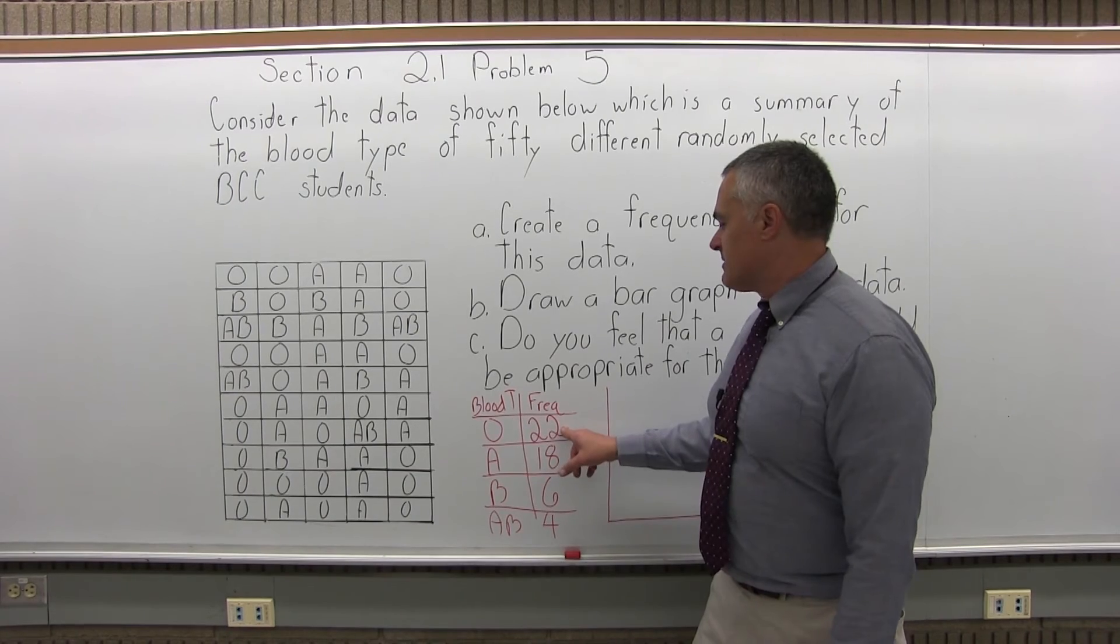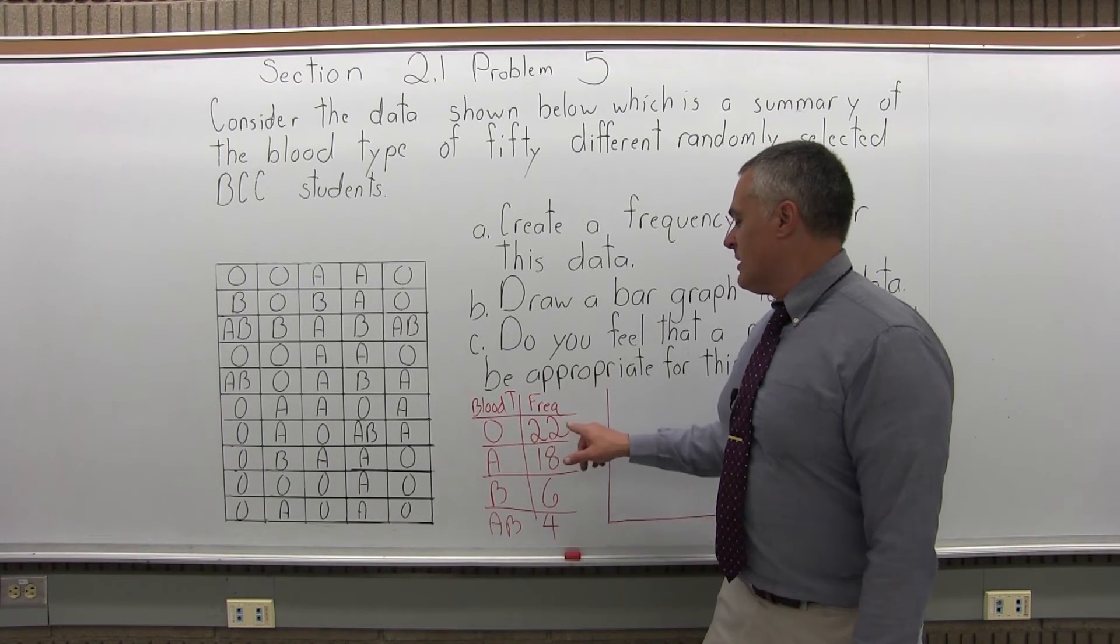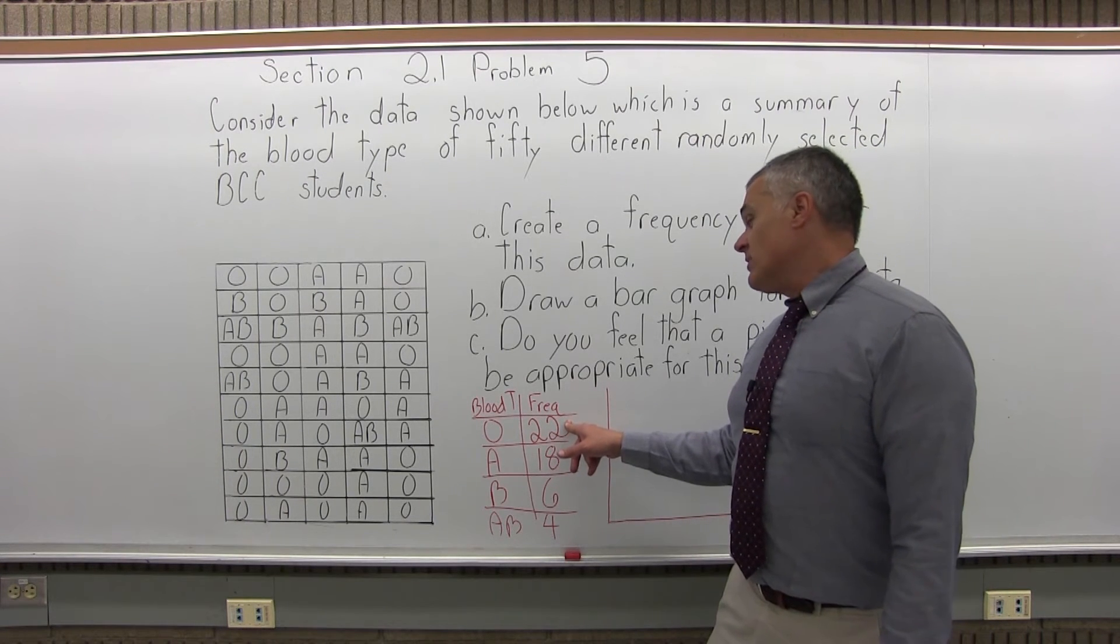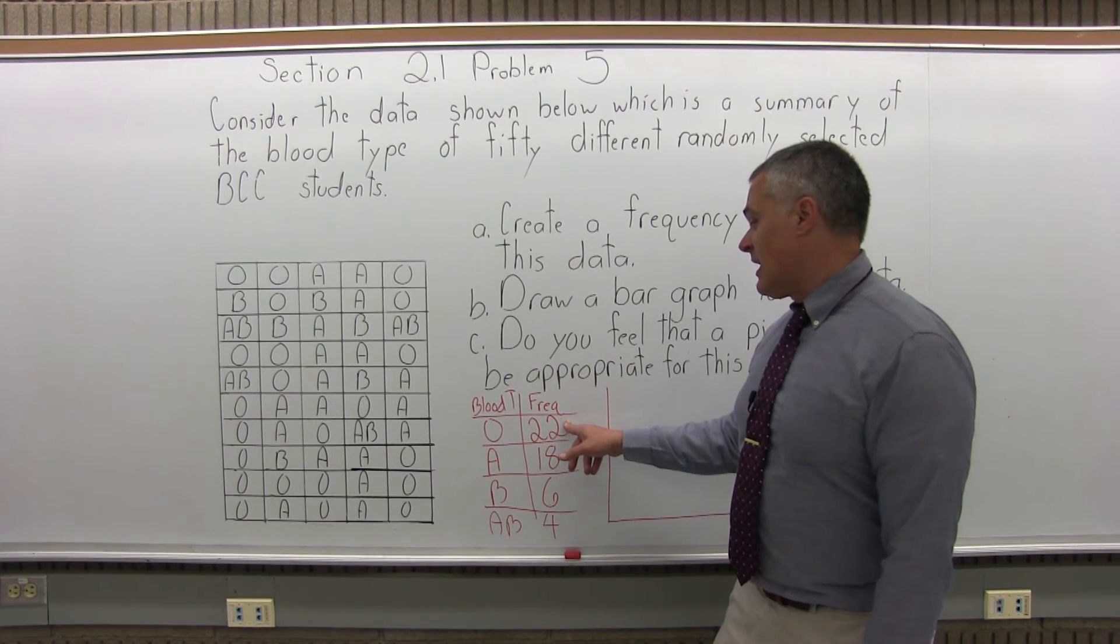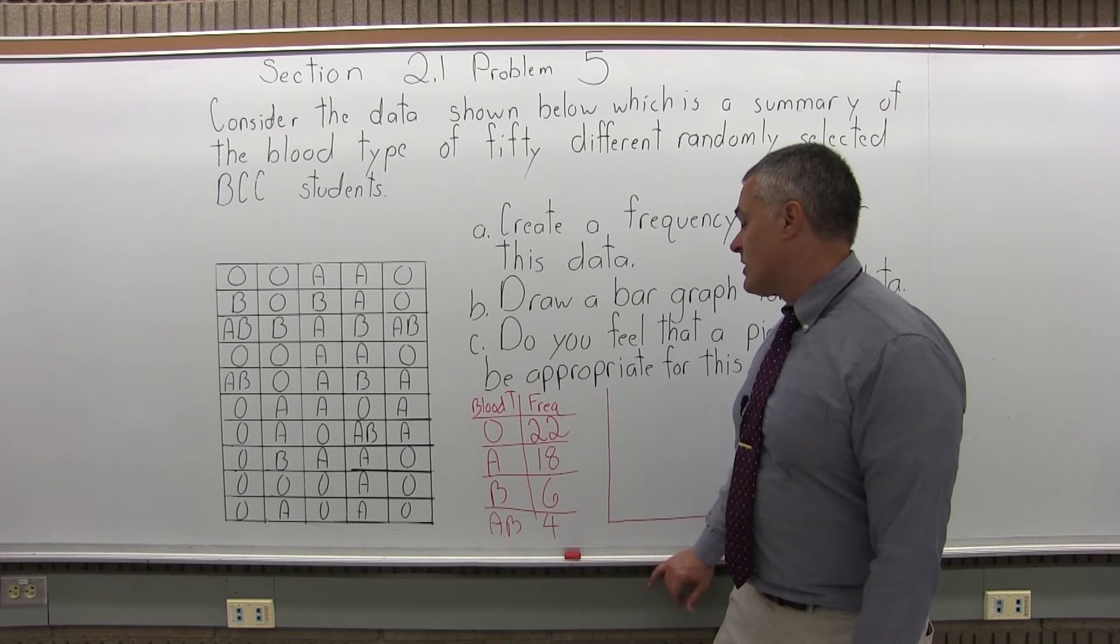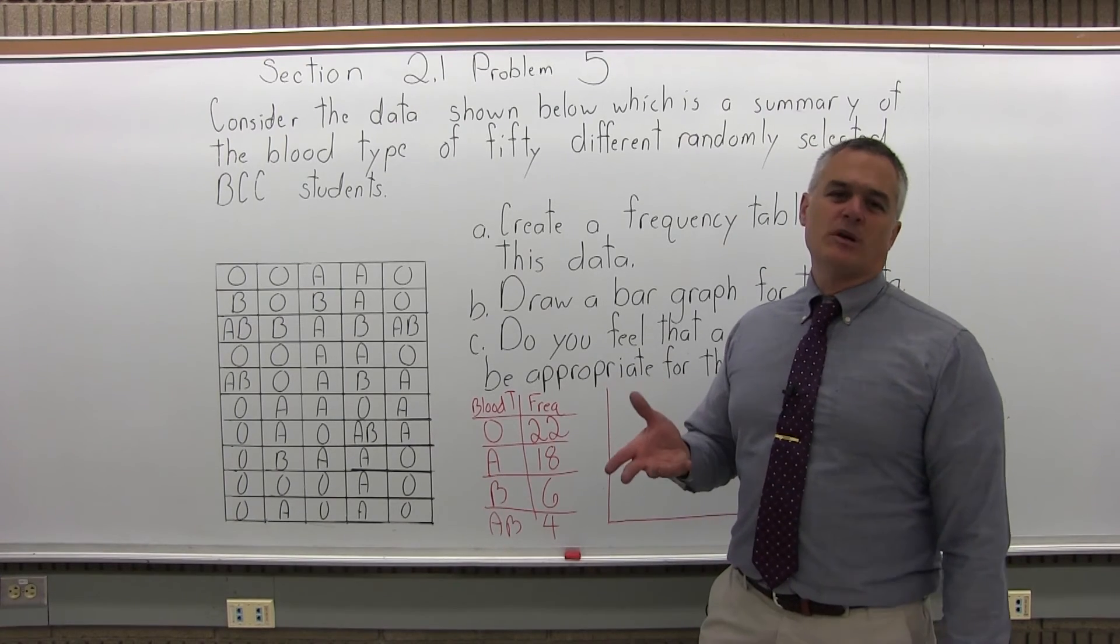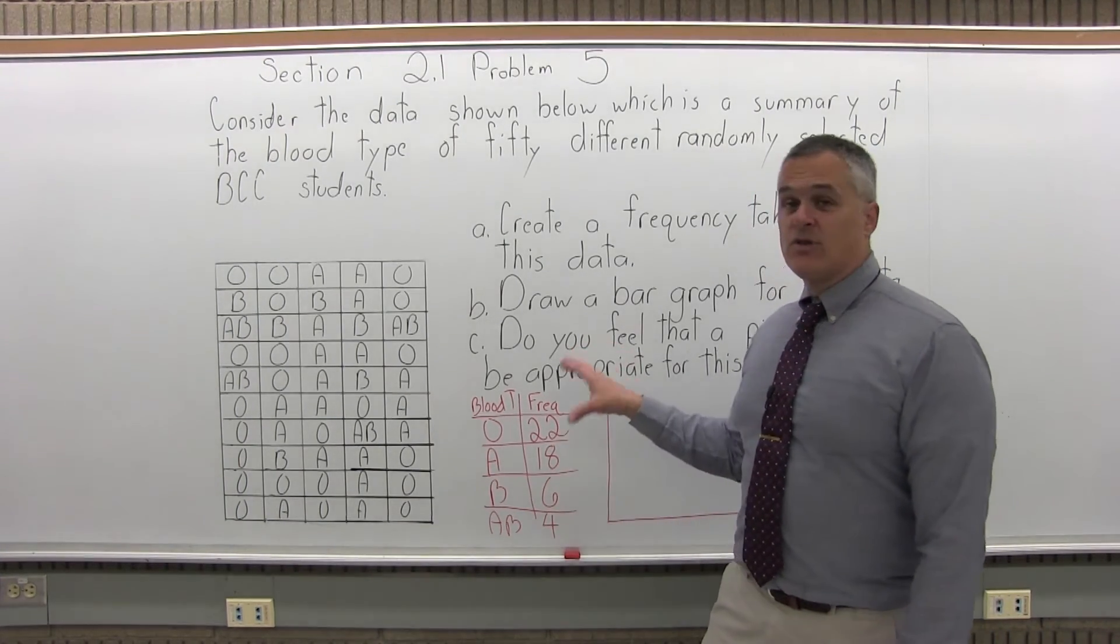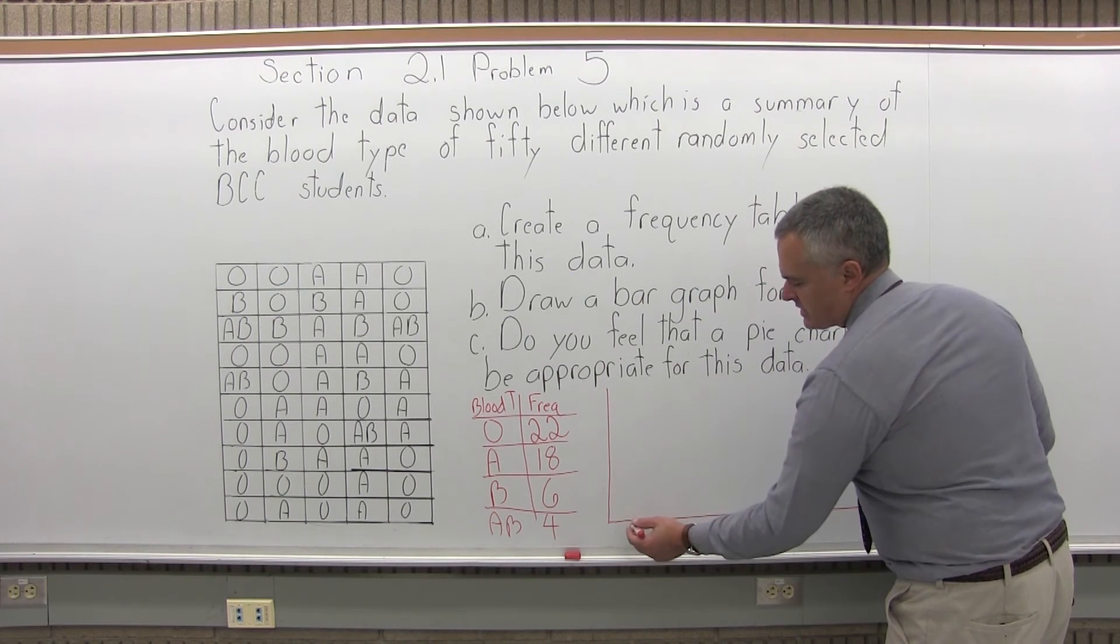So I'll run my number scale along the bottom. Now, again, determine your number scale by the biggest bar that you're going to have to deal with, which will be the bar for blood type O. It's going to go up to 22. You could even go out 22 little lines. That's not too bad. If you go two at a time, you'd need 11 lines. Five at a time, you'd need five lines to 25. I'd probably go two at a time because usually I like to have about 10 lines. 11 is close enough. And, again, you don't have to do it a certain way. As long as you label it, it's okay.